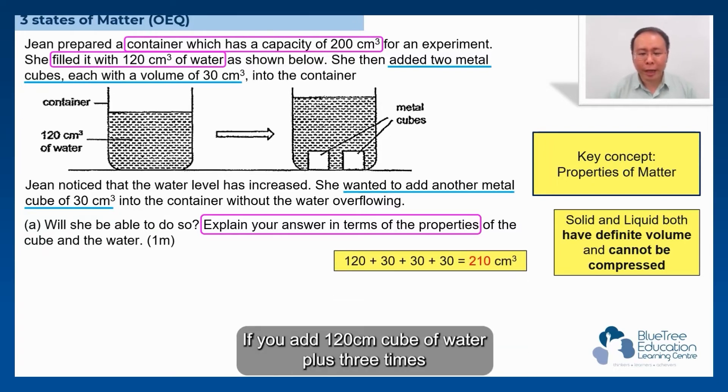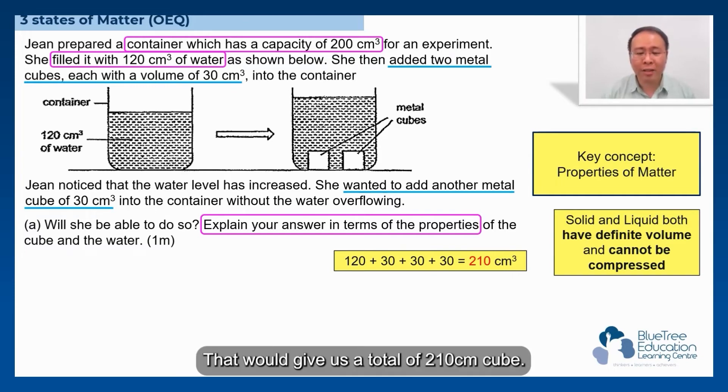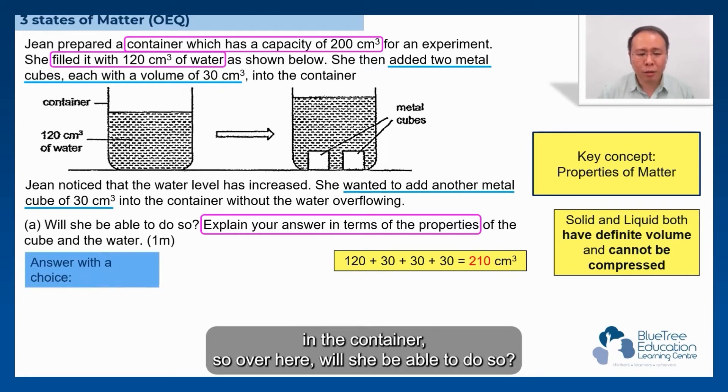Alright, if you add 120 cm cubed of water plus three times of the metal cube, which is 30 cm cubed each, that will give us a total of 210 cm cubed. Bear in mind, she only has 200 cm cubed of capacity in the container. So over here, will she be able to do so?